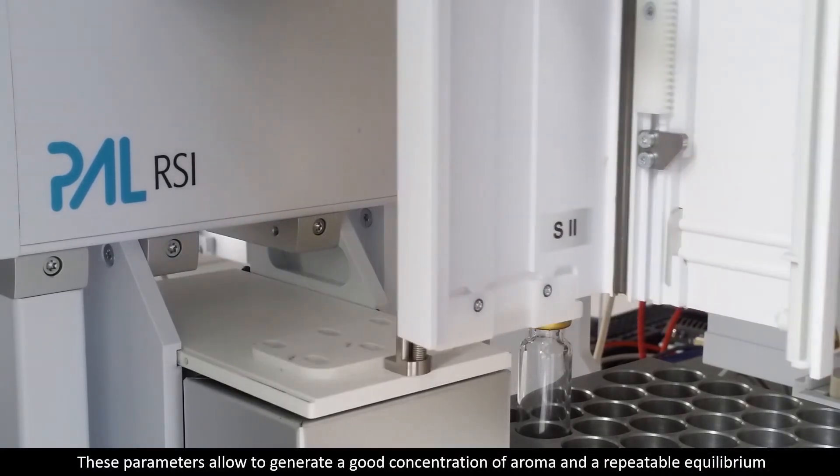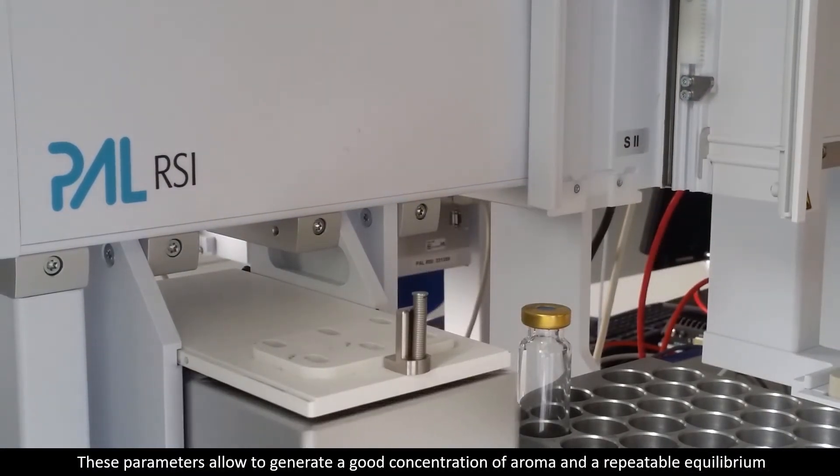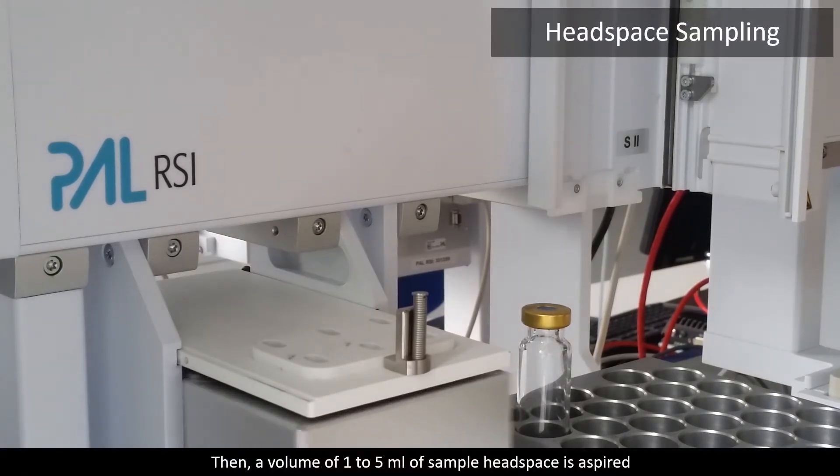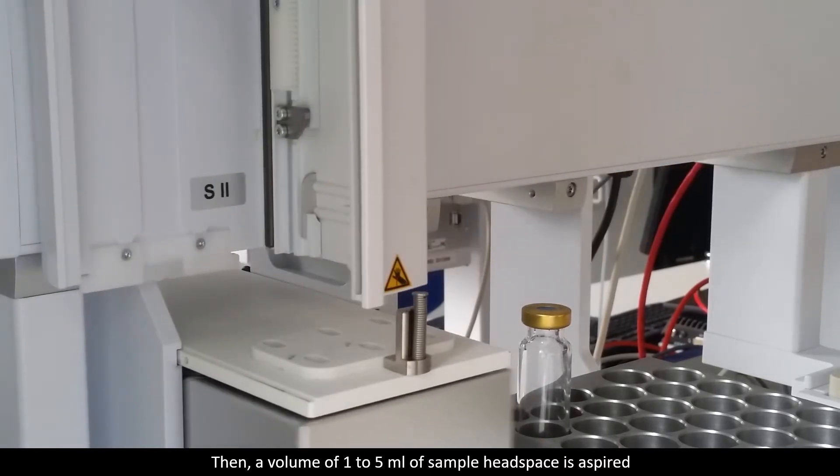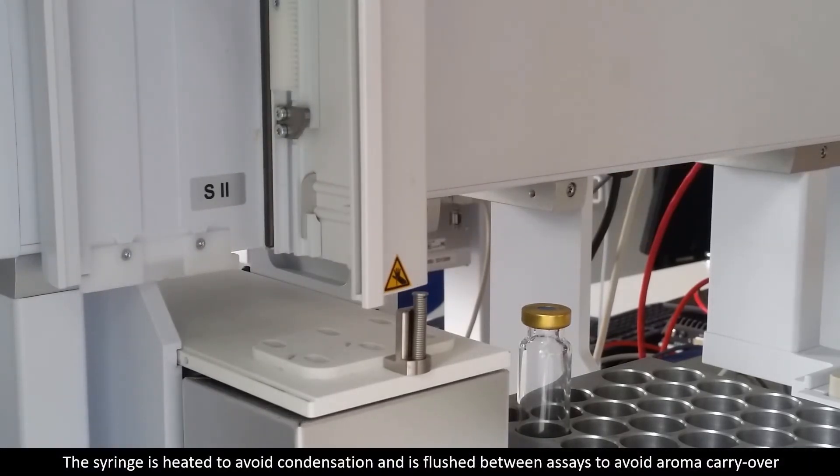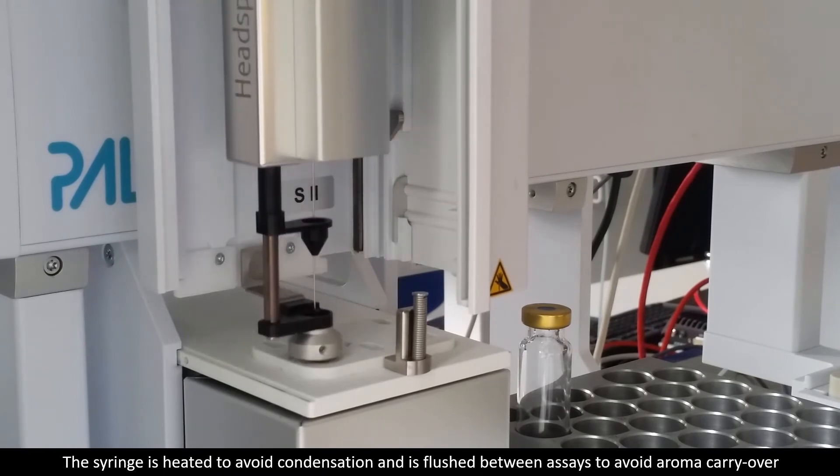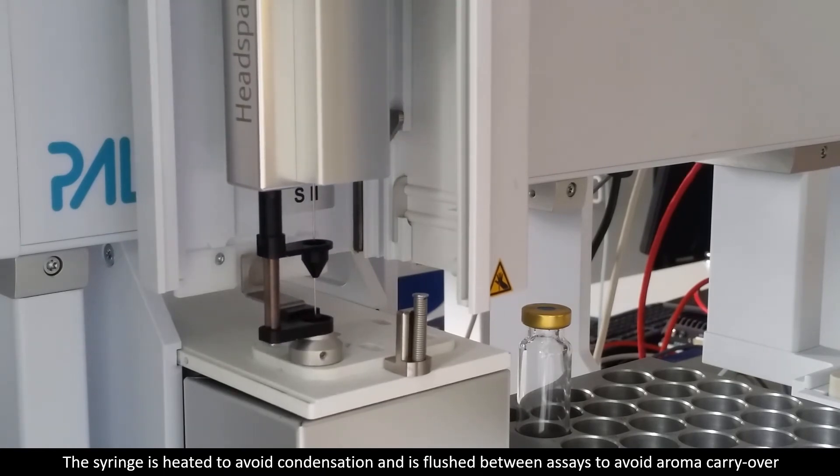These parameters allow to generate a good concentration of aroma and a repeatable equilibrium. Then, a volume of 1 to 5 ml of sample headspace is aspirated. The syringe is heated to avoid condensation and is flushed between assays to avoid aroma carryover.